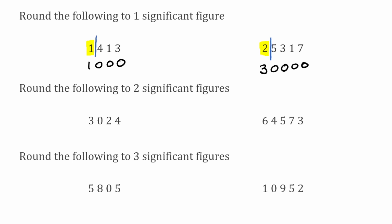For the next couple of questions we're rounding to two significant figures. For the first example of 3,024: 3 is the first significant figure, and moving to the right, 0 is the second significant figure. We put our line between the 0 and the next digit. Looking to the right we have a 2, so we keep the previous digit the same — the 0 stays as a 0. Copying down the digits: 3 and 0. Filling in placeholders: a 0 under the 2 and a 0 under the 4. So 3,024 rounded to two significant figures is 3,000.